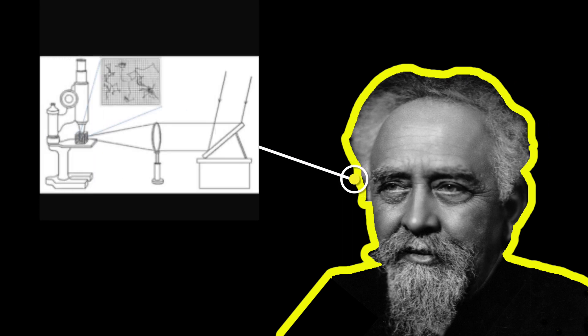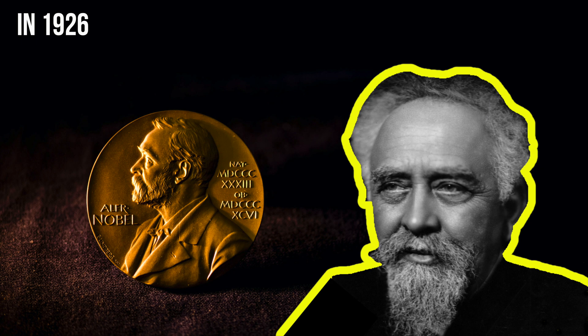That same year, a French physicist named Jean-Baptiste Perrin conducted a series of experiments that confirmed Einstein's predictions. His work later earned him his own Nobel Prize in Physics in 1926.